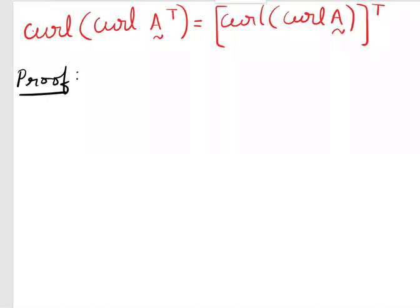Hello class. Today let us derive the identity: curl of curl A transpose is equal to curl A, curl of curl A, whole transpose. We have to note that on the LHS we have A transpose, and on the RHS we have only A with the whole transpose outside.